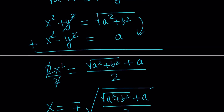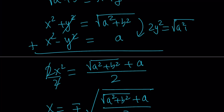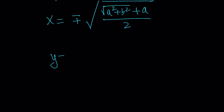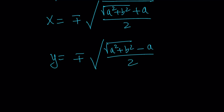How about y? If we subtract the equations instead, we get 2y squared equals the square root of a squared plus b squared minus a. Dividing by two and taking the square root gives y as plus or minus the square root of the quantity: the square root of a squared plus b squared minus a, all divided by 2. So we have x and y. Putting them together, the square root of a plus bi is plus or minus the square root of that expression, plus i times the square root of the y expression.